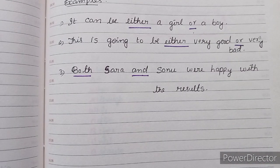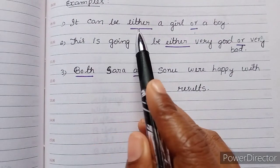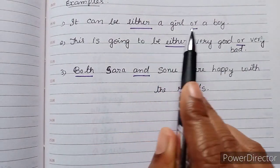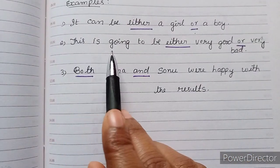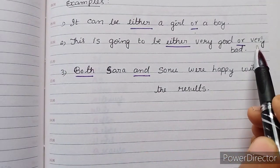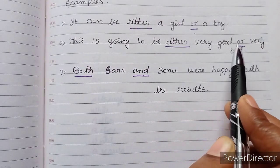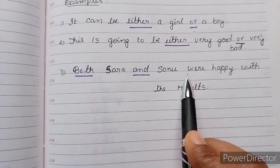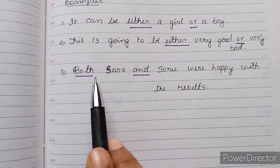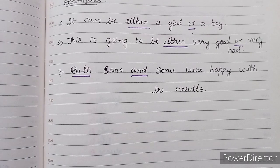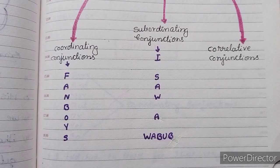Let's see examples. 'It can be either a girl or a boy' — 'either/or' is the correlative conjunction. 'This is going to be either very good or very bad' — 'either/or.' 'Both Sarah and Sonu were happy with the results' — 'both/and' is the correlative conjunction. These are the three types of conjunctions. I hope you are clear with this topic — thank you for watching.